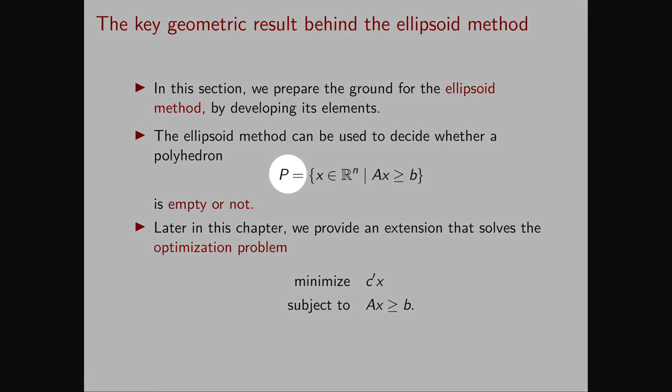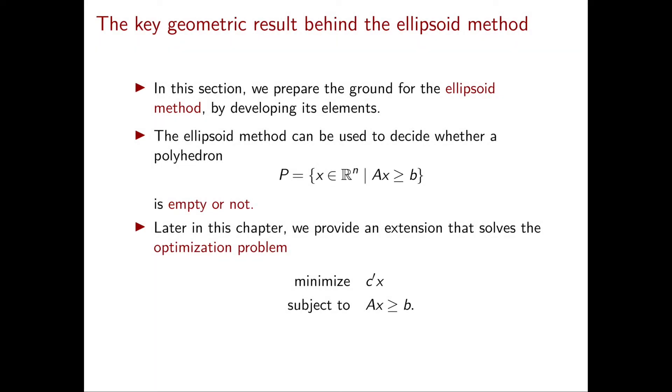For now, our ellipsoid method will be an algorithm to decide whether a polyhedron is empty or not. Our polyhedron is denoted by P, and it is the set of points in R^n that satisfy the system of linear inequalities Ax greater than or equal to b. Later on, we will also see how the ellipsoid method can be used to solve optimization problems.